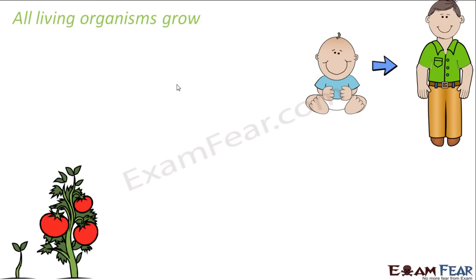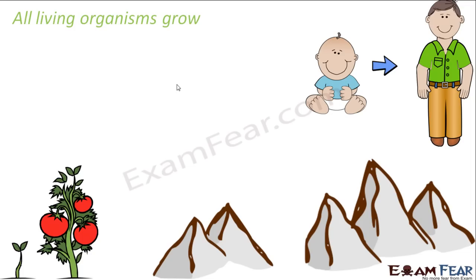But we can't say that growth defines life — we can't say that anything that grows is living. That is not correct. For example, if you have sand dunes: if any of you have been to a desert, you would have seen sand dunes — heaps of sand which form small mountain-like structures. Now what happens if more and more sand is swept to that sand dune by wind or some other source? The size of the sand dune grows — it becomes taller and taller. So the sand dune is actually growing, by accumulation of more and more sand. Similarly, a mountain may grow by accumulation of more and more rock, sand, and other particles.